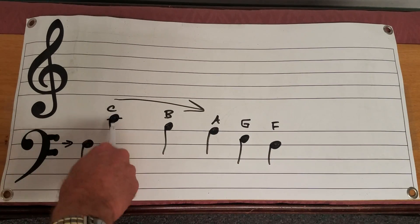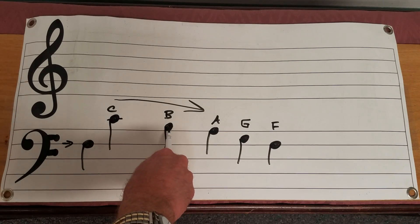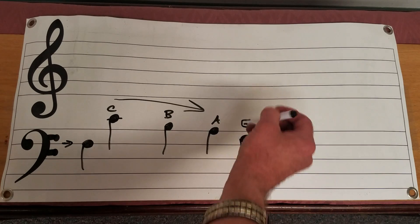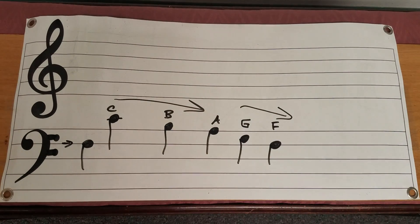Middle C always being up here above the line. B sitting on top of it. A going through the line. Then again going backwards, still going backwards. G and F.